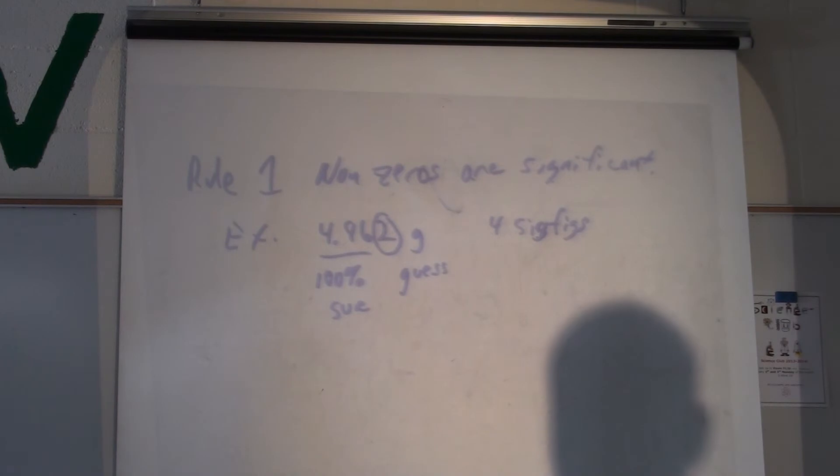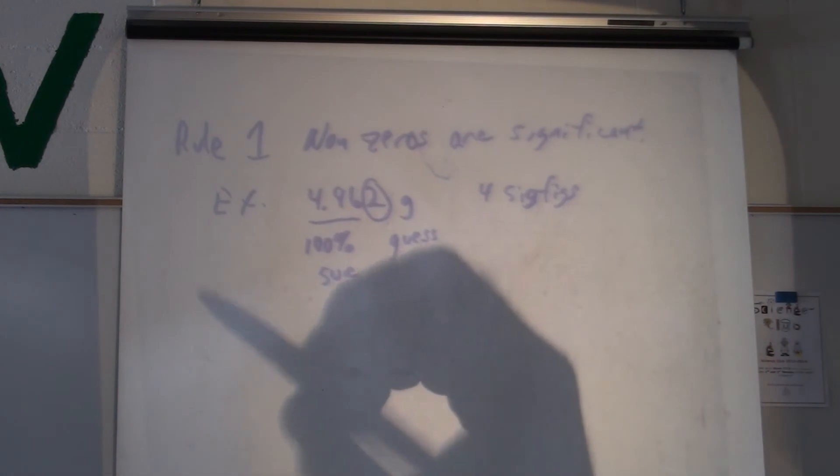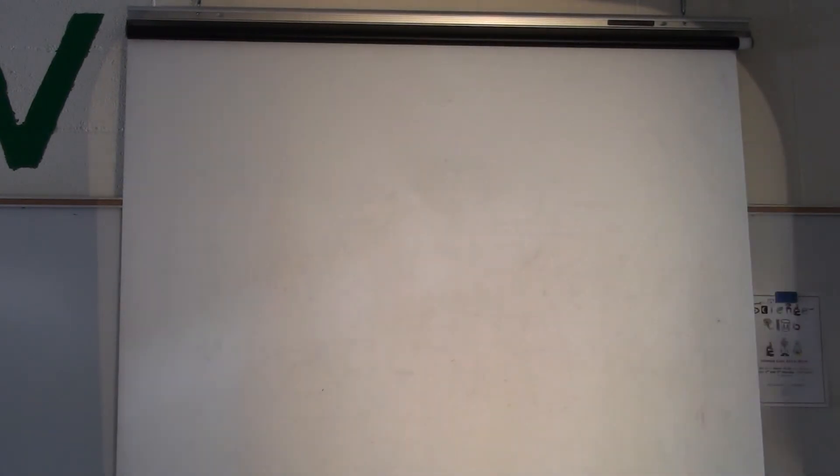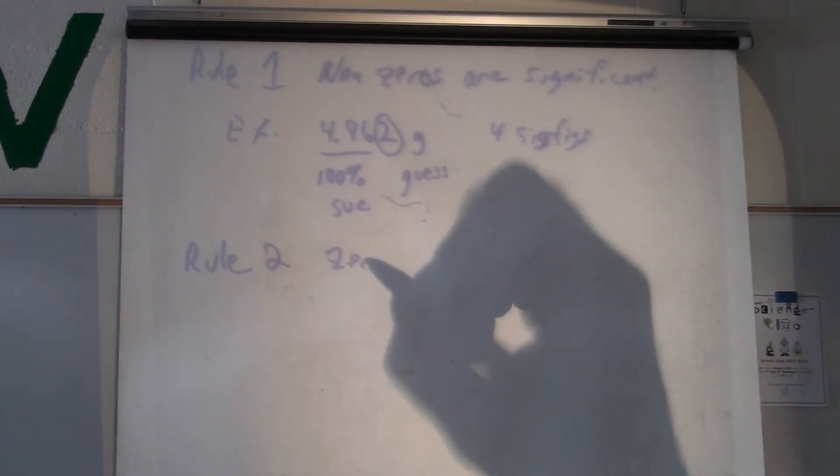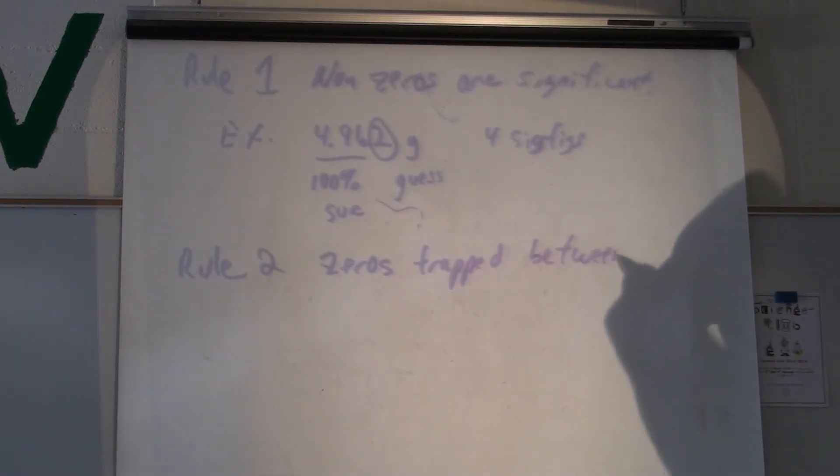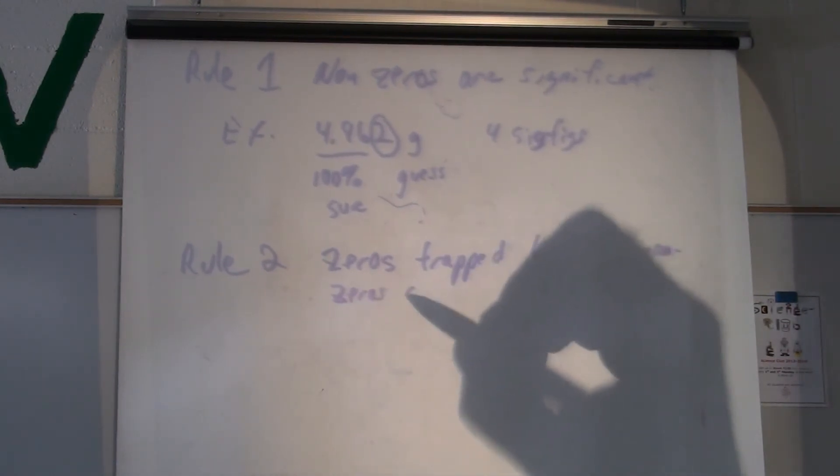So rule one deals with digits that are not zero. Rules two through seven deal with zero. Zero is what's tricky. Zero is what gets people goofed up. Yeah, Kyla. Can I move it back? Yeah. Take the red pass over there. So rule two. Zeros trapped between non-zeros are significant. So rules two through seven are going to deal with zero. It says that zeros trapped between non-zeros are significant.